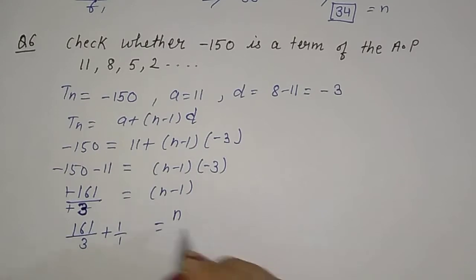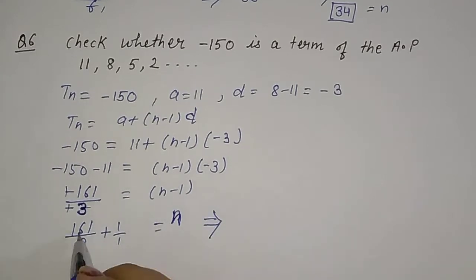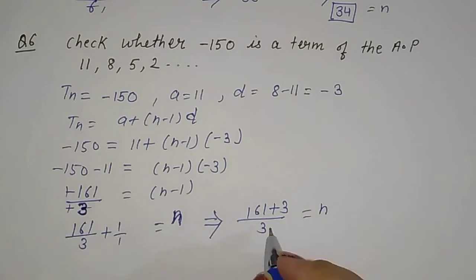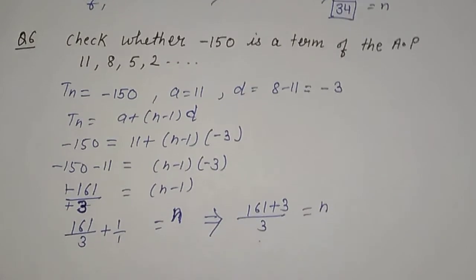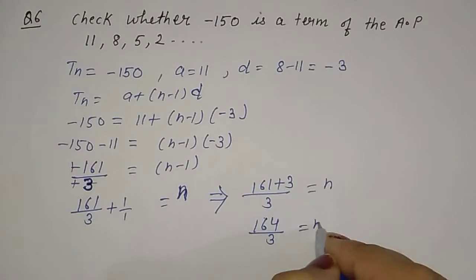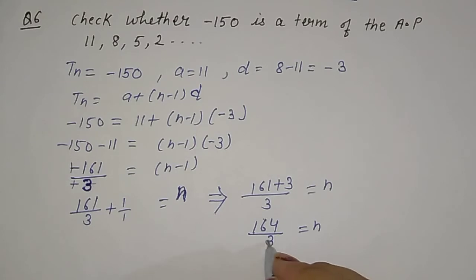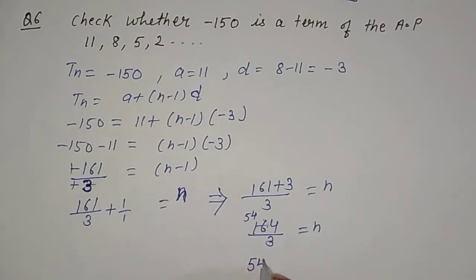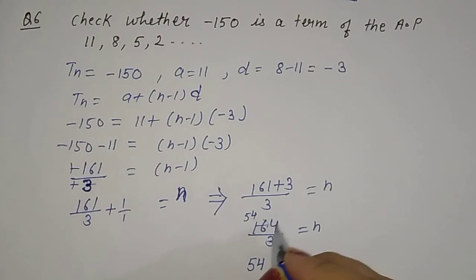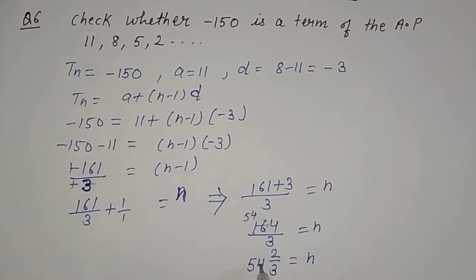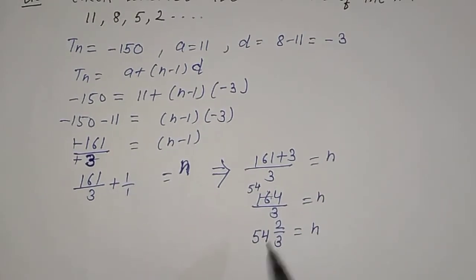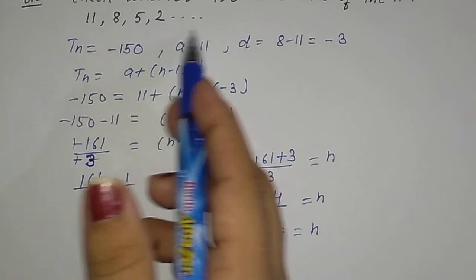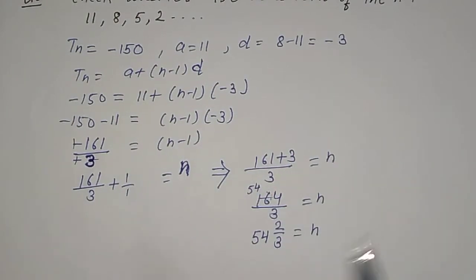Solving further: 161/3 + 1 = N. That gives (161 + 3)/3 = 164/3 = N. Dividing 164 by 3: 3 × 54 = 162, remainder 2. So N = 54 and 2/3. This is not a whole number. Since N must be a positive integer, -150 is not a term of this AP. The value is a decimal/fraction, not a natural number.